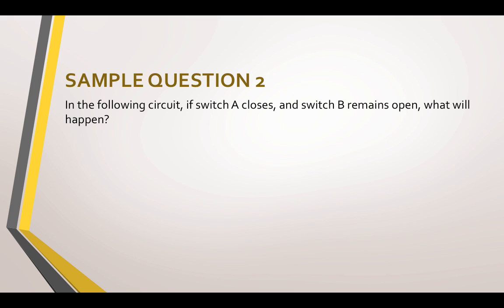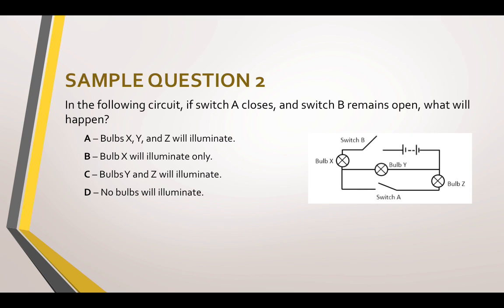Sample question two. In the following circuit if switch A closes and switch B remains open what will happen? So there are your answer options and here is your circuit. So if switch A closes, so this switch here closes so that will be shut and form a complete circuit there. But switch B remains open what will happen? A. Bulbs X, Y and Z will illuminate. B. Bulb X will illuminate. C. Bulbs Y and Z will illuminate. Or D. No bulbs will illuminate. As you can see, if this switch closes but this one is open, you should realize that it's no bulbs will illuminate because this is a broken circuit. This switch, switch B, would have to be closed in order for the circuit to be complete because the battery, the power source is on that route there.